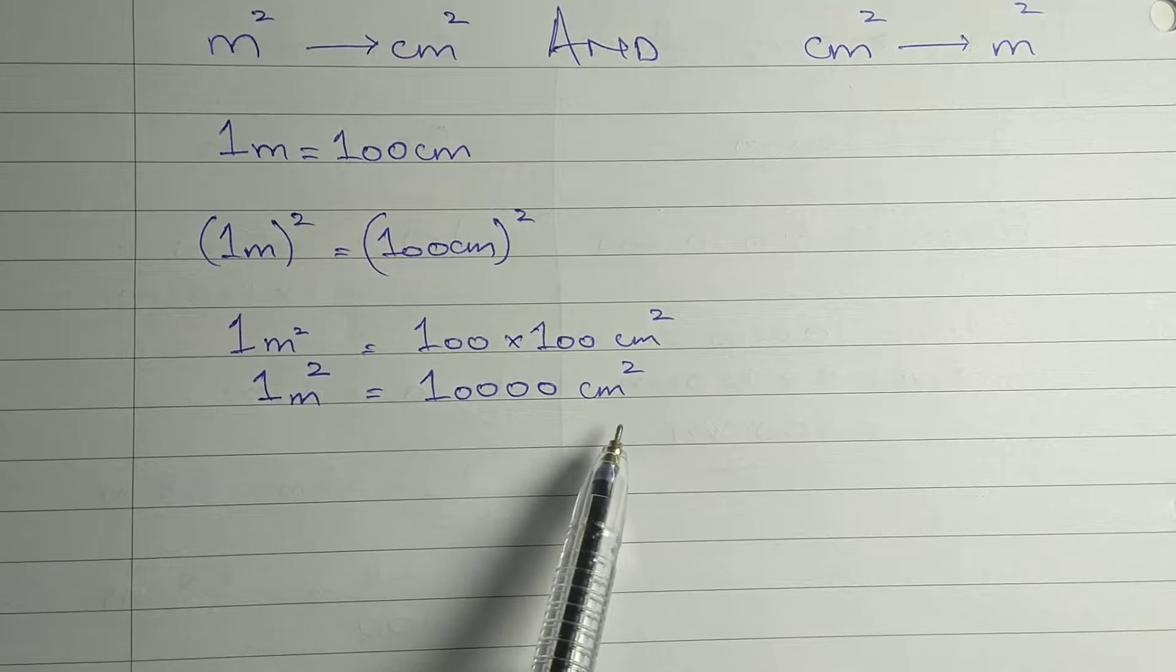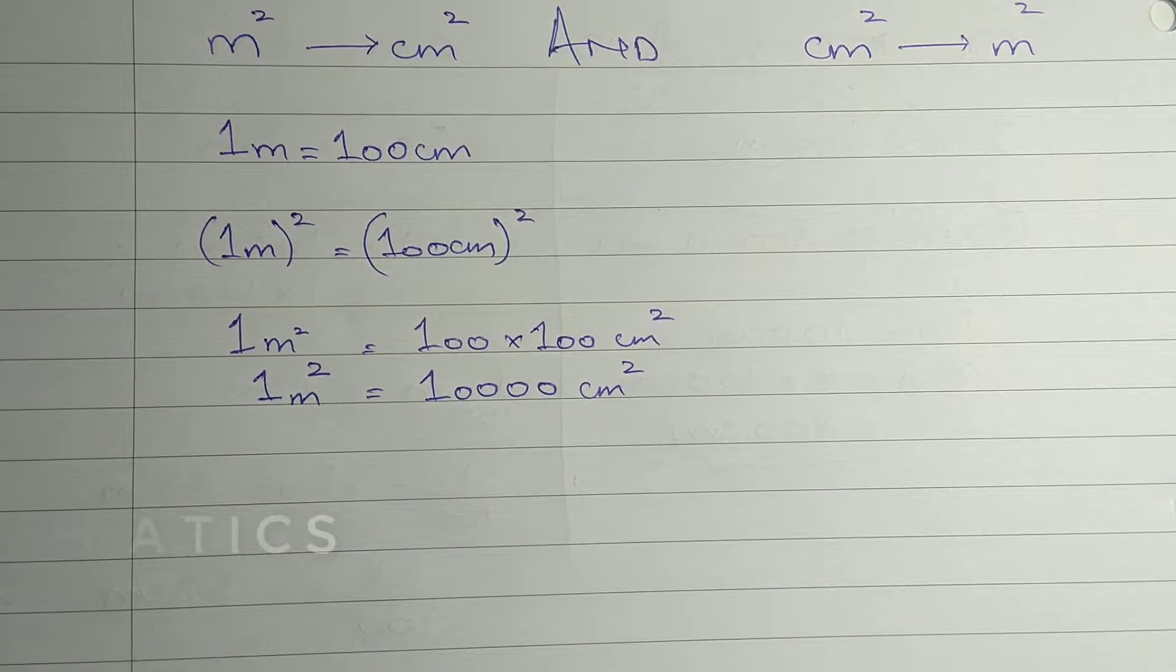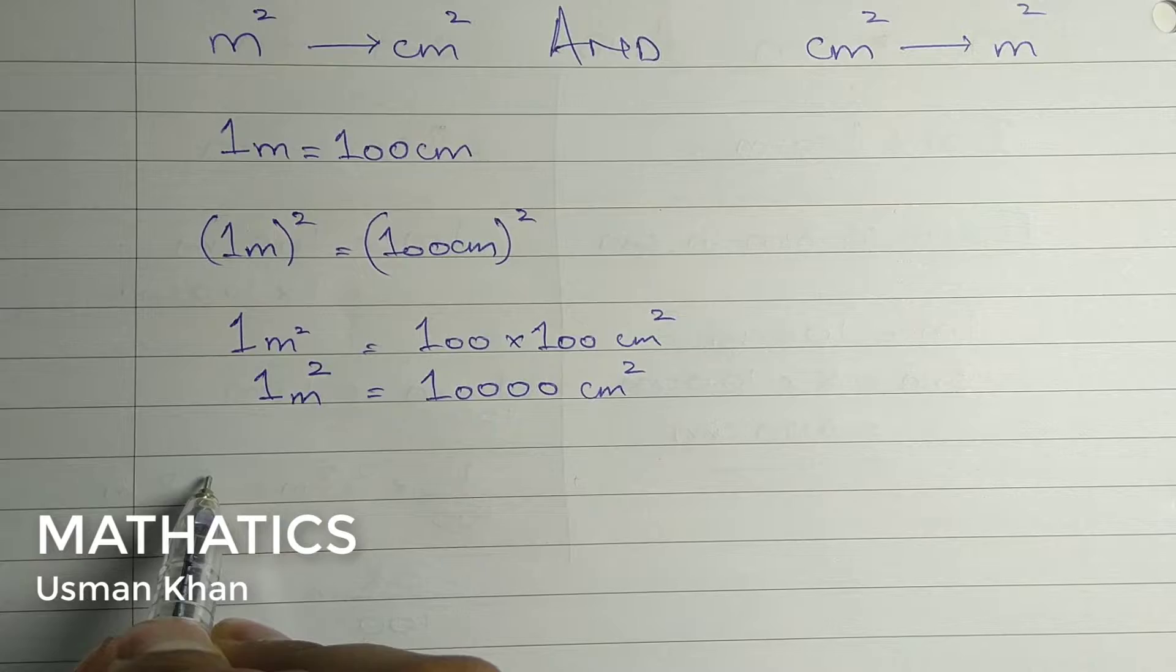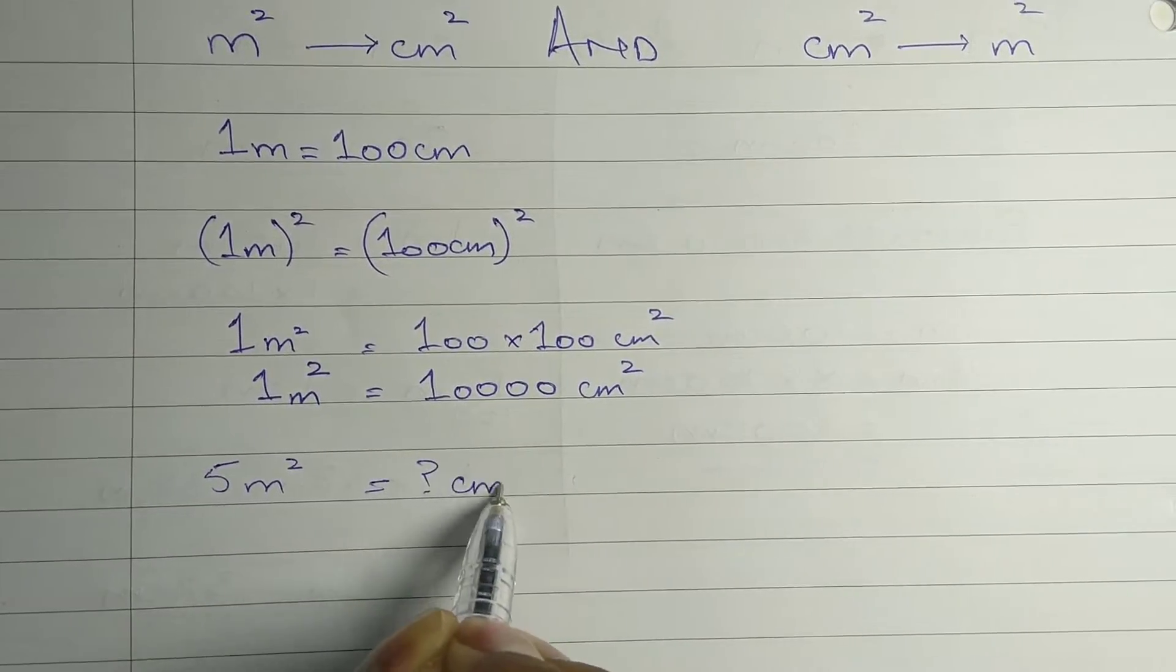With this relation we can convert any given value of meter square into centimeter square. For example, let's take 5 meter square and convert it into centimeter square.